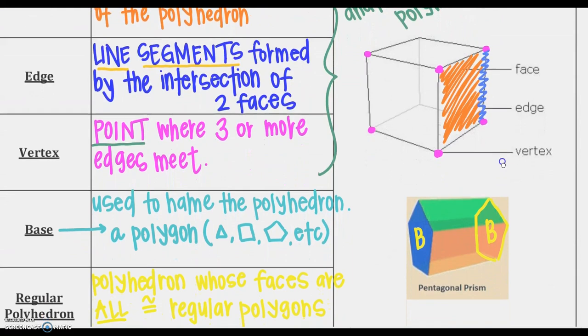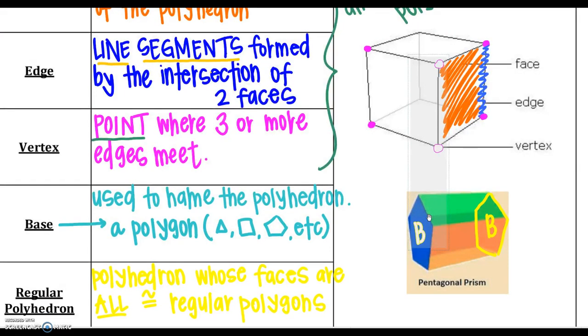A base. So used to name a polyhedron, and we'll talk a little bit more about that as well. It is going to be a polygon. So notice I have a big B here and a big B here. There are two bases in a prism, and notice those are your two congruent faces that we'll call bases. And the polyhedron, notice it is a pentagonal prism. My bases are both pentagons, so that is how I name my prism.